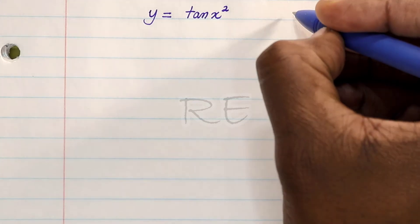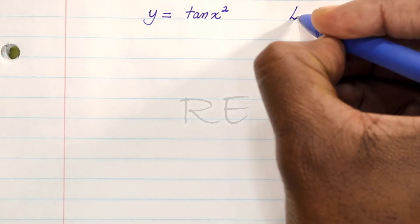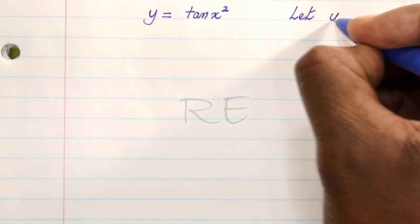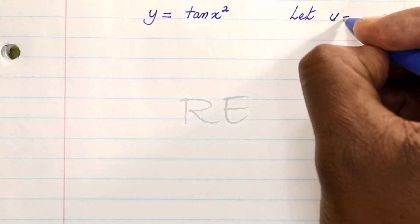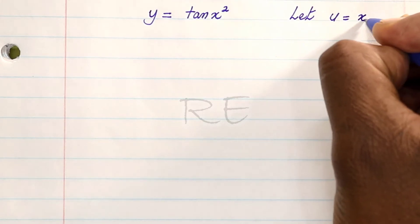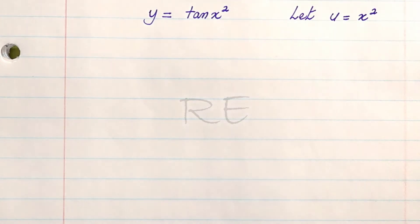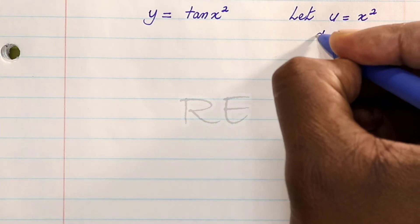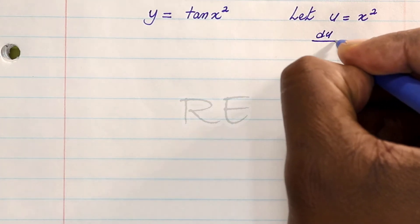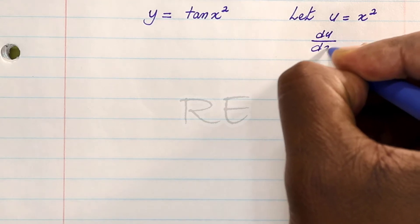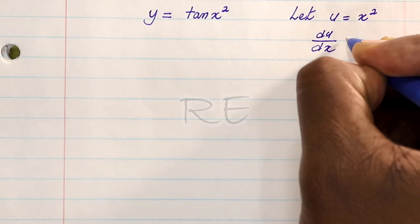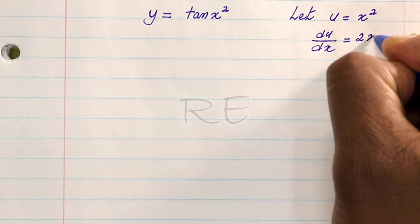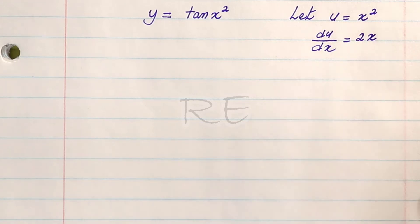y is equal to 10x squared. We're going to let u equal to x squared. Therefore, its derivative u prime, which is du/dx, is equal to 2x.